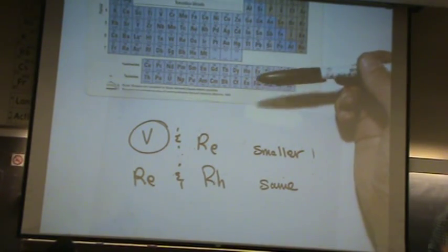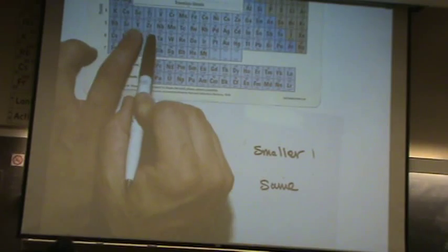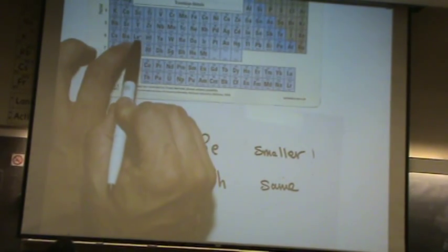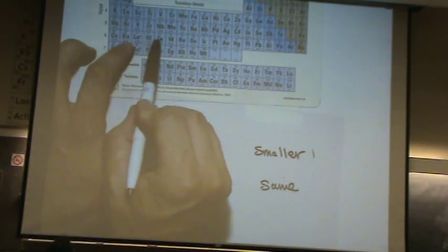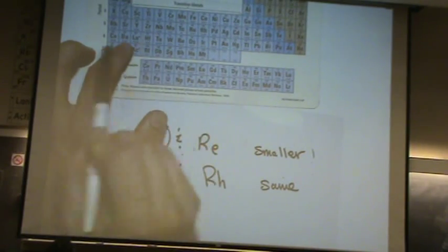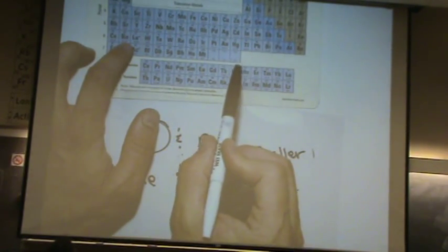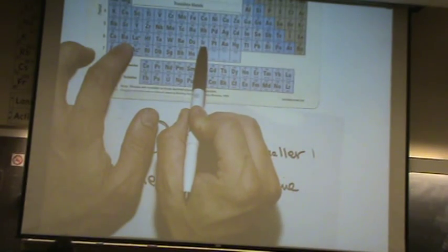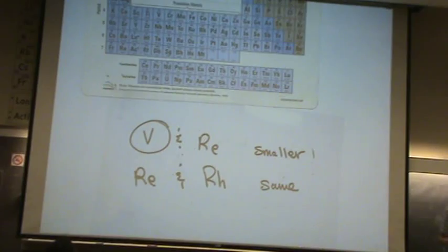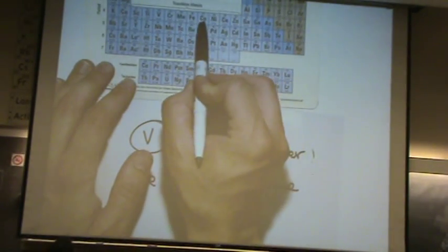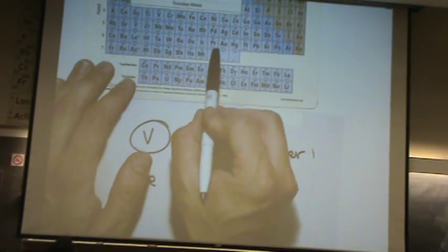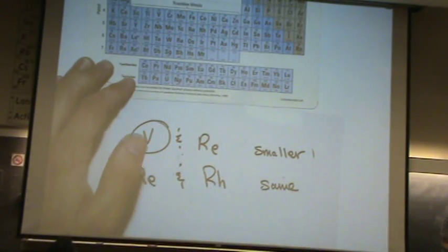That's true. For example, zirconium is about the same size as hafnium and tungsten. Or you could say iridium is about the same size as ruthenium, rhodium, and palladium. However, cobalt is smaller than ruthenium, rhodium, palladium, osmium, iridium, and platinum. Does that make sense?